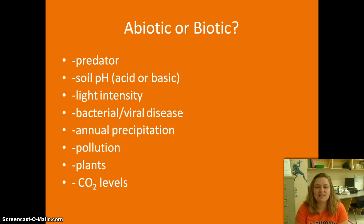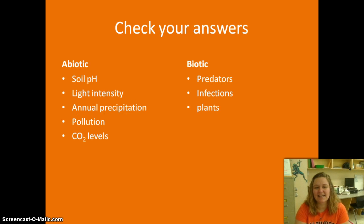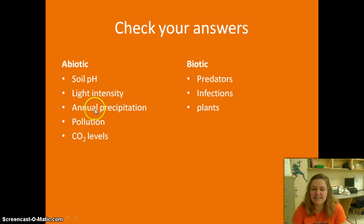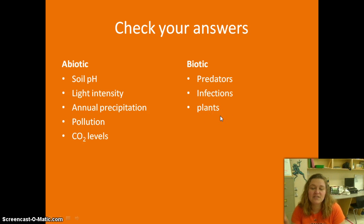I want you to take just a minute and decide: do you think these things are biotic or abiotic? If we take a look at these lists, you should have decided that soil pH, light intensity, annual precipitation, pollution, and CO2 levels are all abiotic factors, while predators, infections, and plants are biotic, because these are living things that are going to affect other living things.